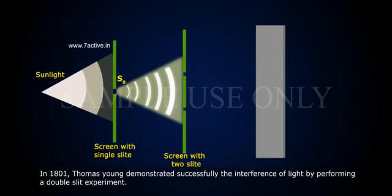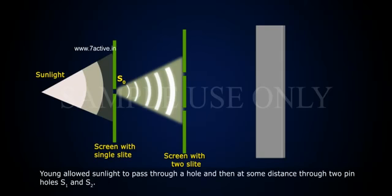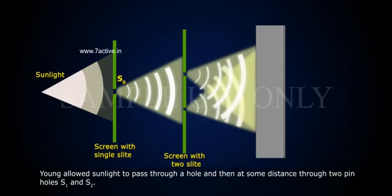In 1801, Thomas Young successfully demonstrated the interference of light by performing a double slit experiment. Young allowed sunlight to pass through a hole and then at some distance, through two pinholes.